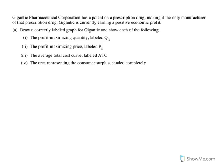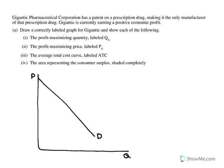Just like set one, you were given a monopoly to draw. The first part of the question about Gigantic Pharmaceutical Corporation is basically to draw the monopoly. We've got our quantity and our price, then demand, marginal revenue, and marginal cost. We also have to put ATC — minimum ATC — below demand because they are making an economic profit.